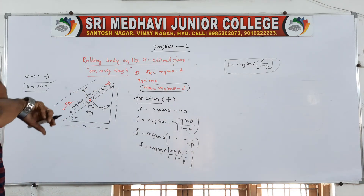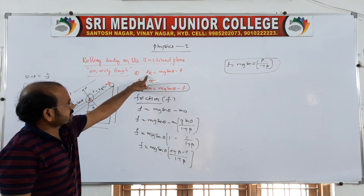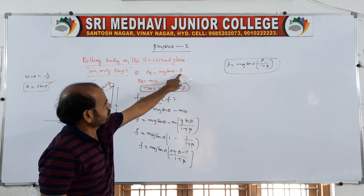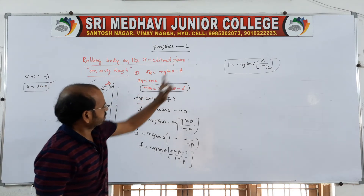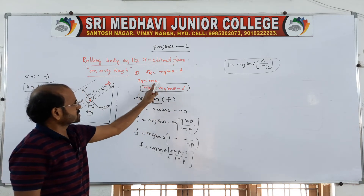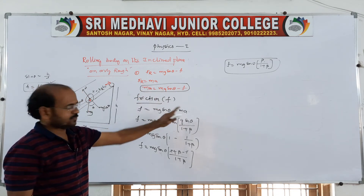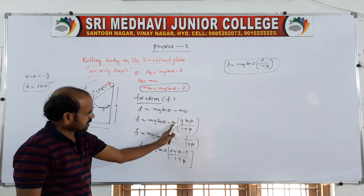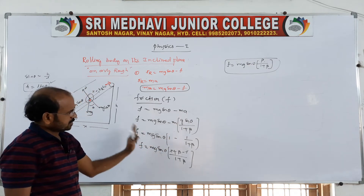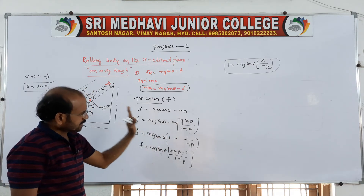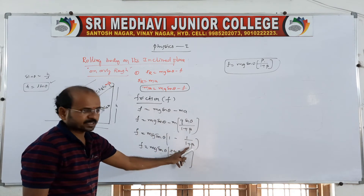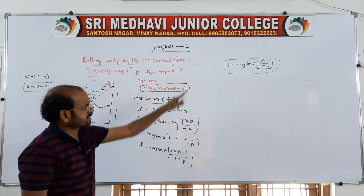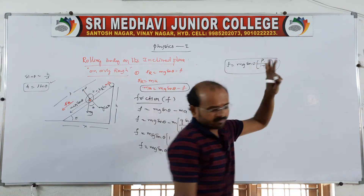From f equals mg sin theta minus ma, we substitute ma and simplify. Taking mg sin theta common with 1 minus 1/(1+beta), taking LCM gives (1+beta-1)/(1+beta). Therefore f equals mg sin theta times beta/(1+beta).